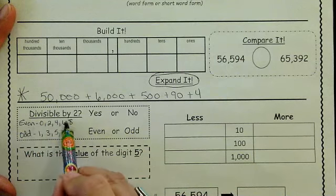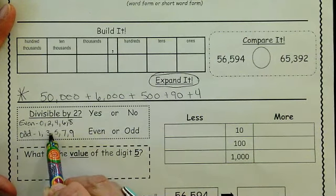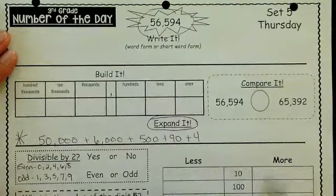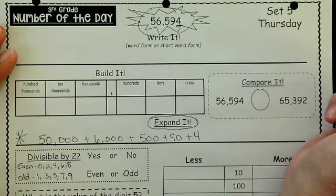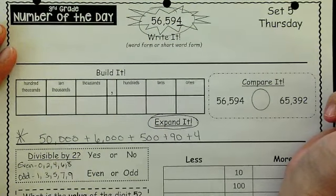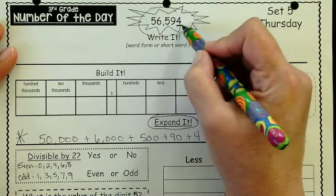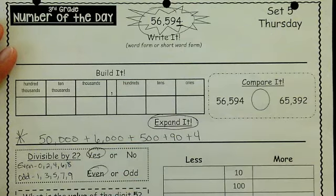If it is an even number, it is divisible by 2. If it is an odd number, it is not divisible by 2. So we look at the very last number, very last digit in our number to determine if it is an even or an odd number. In this case, 4 is an even number, so it is divisible by 2.